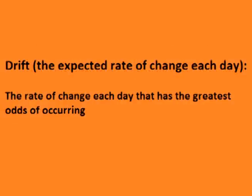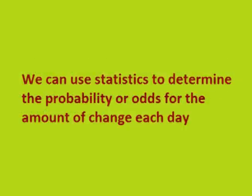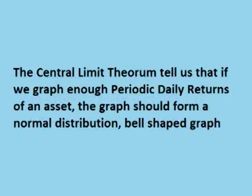The asset's drift is the expected rate of change for price. However, it is probably not the rate price will actually change each day — it is simply the rate that has the greatest odds of occurring. Because each day the asset can increase or decrease at any random rate, the central limit theorem tells us that we can assume the periodic daily rates of return will be normally distributed.